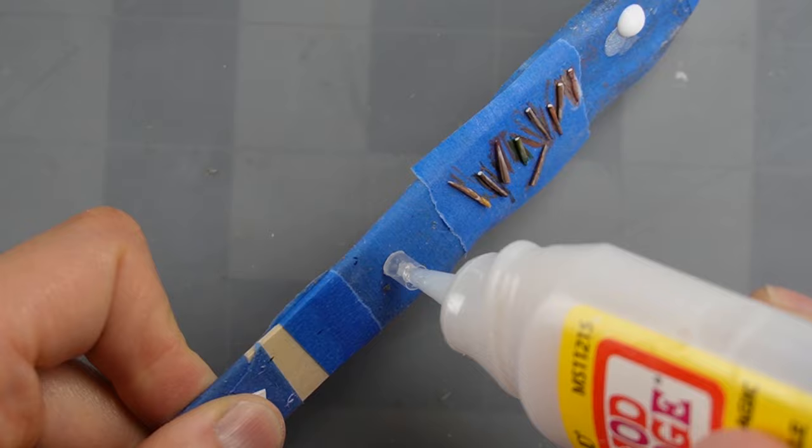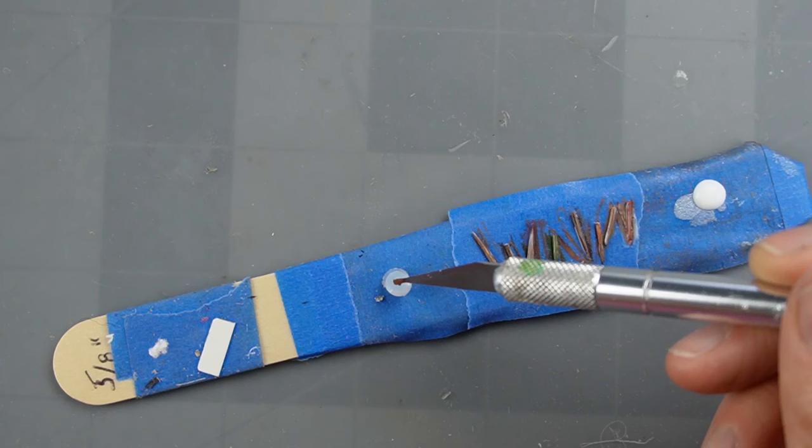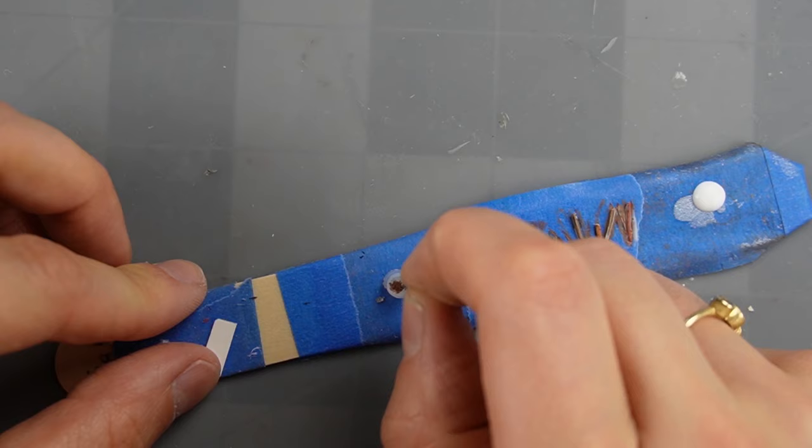To make the water, I'm filling my little faux glass jar with some dimensional magic from Mod Podge. And to give it a cloudy paint water appearance, I'm adding some chalk pastels and mixing it with a sewing needle.